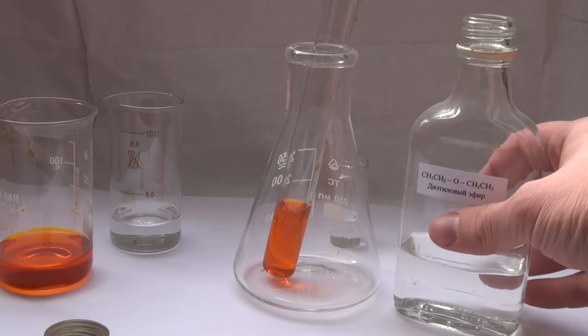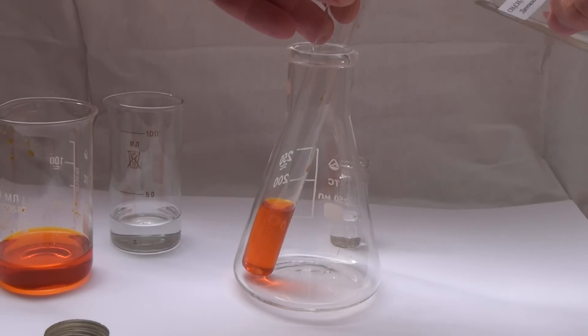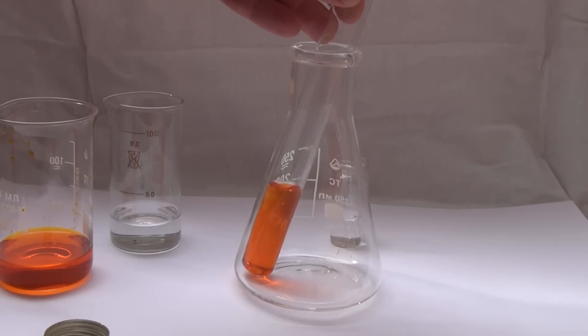Next, we will need diethyl ether. Diethyl ether has a low density, so it will float on the surface of the potassium dichromate solution.